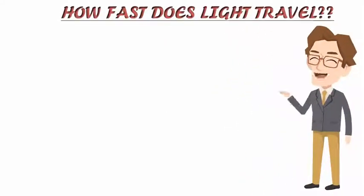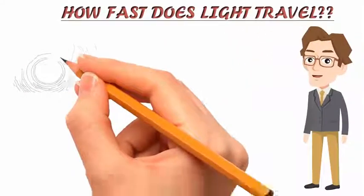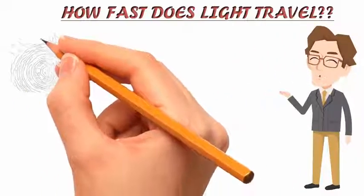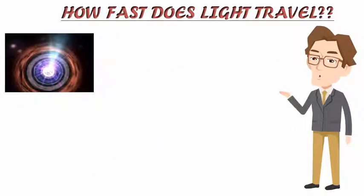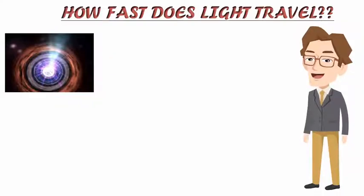Today we are going to answer the question: how fast does light travel? So let's start. Light travels at exactly 299,792,458 meters per second in a vacuum, about 300,000 kilometers per second.